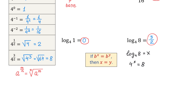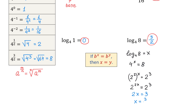Notice that on the left side, we can write 4 to the x power as 2 squared to the x power. On the right side, we can write 8 as 2 to the 3rd power. To the left, we will apply the power rule and we will multiply 2 and x. Then, we will have 2 to the 2x equals 2 to the 3rd power. Now, because we have the same base on both sides, we can make the exponents equal. Then, 2x equals 3. And if we divide both sides by 2, x will be equal to 3 over 2.